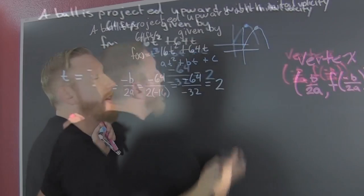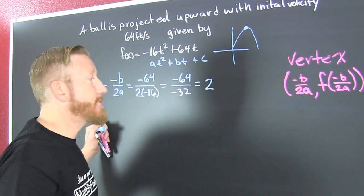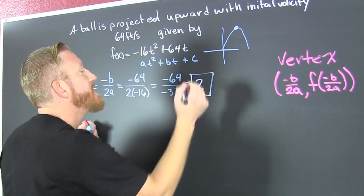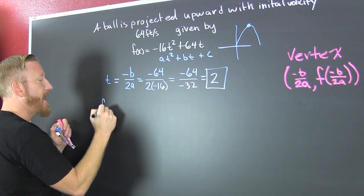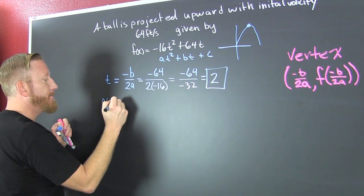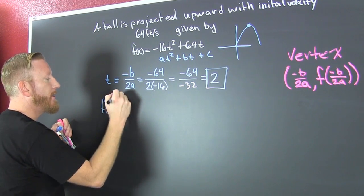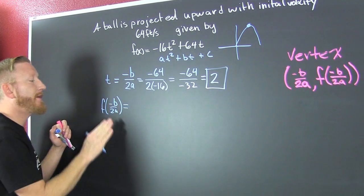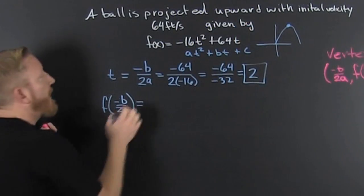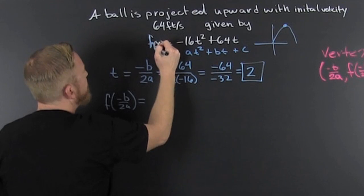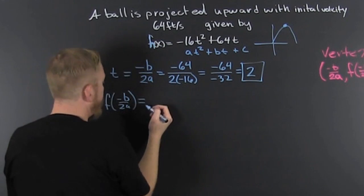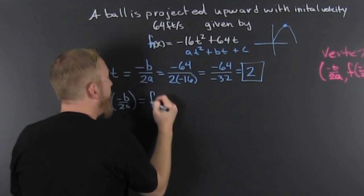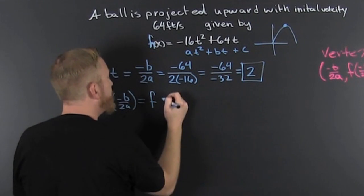Now that we have our t, we can find f of minus b over 2a. This is going to give us our maximum height - they probably should have just called this h for height. So we're looking for f of 2.